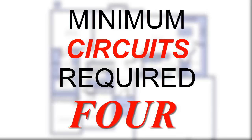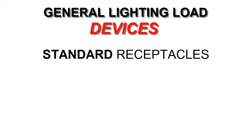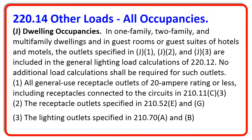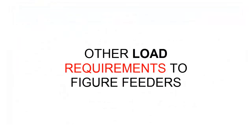You may be wondering what is all included in the general lighting load. First of all, we have all of our regular receptacles that are in our dwelling unit — anything that's not in the kitchen or the laundry. And in Article 220.14J, we have three sections. Included in those sections are: number one, our GFCI receptacles for our bathrooms found in Article 210.11C3; in J2, it also includes our receptacles that are outdoors and in our unfinished basements and garage areas; and this calculation also includes all of our lighting outlets.